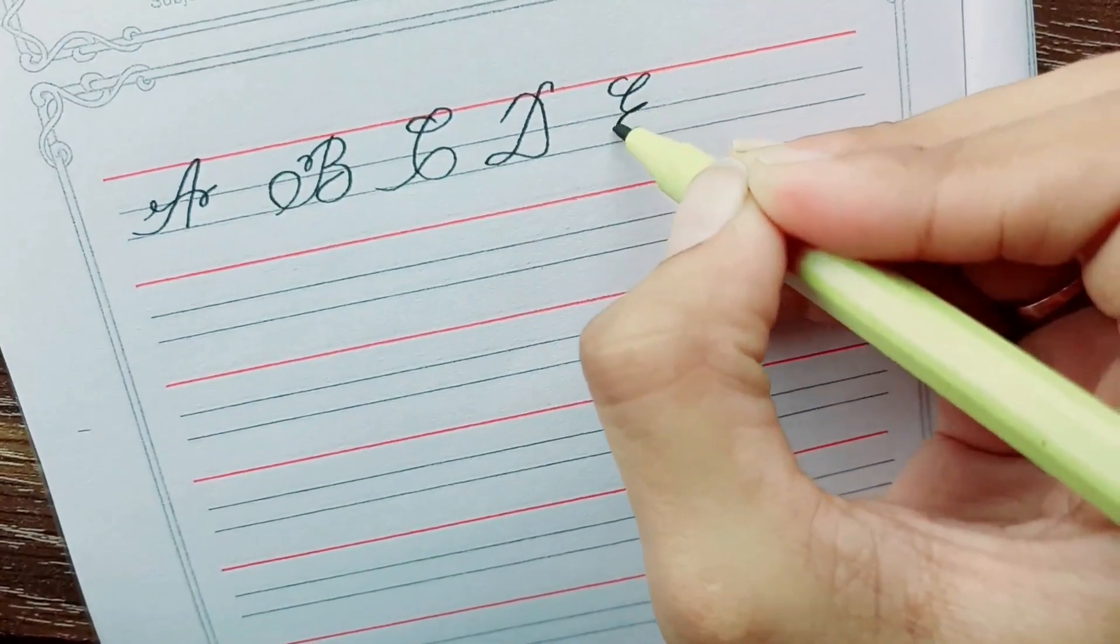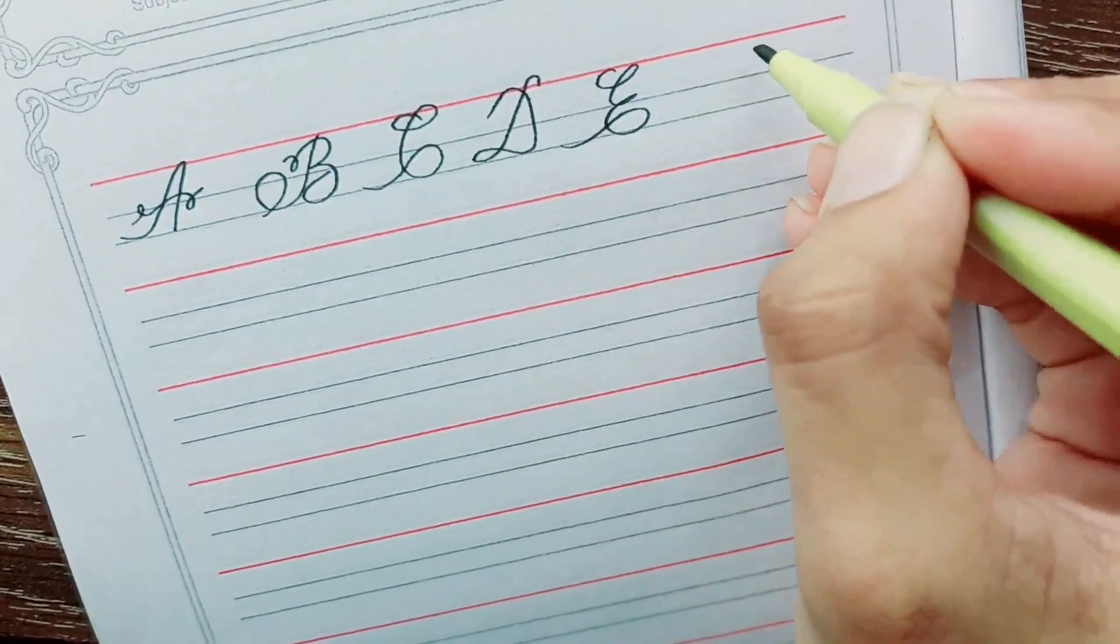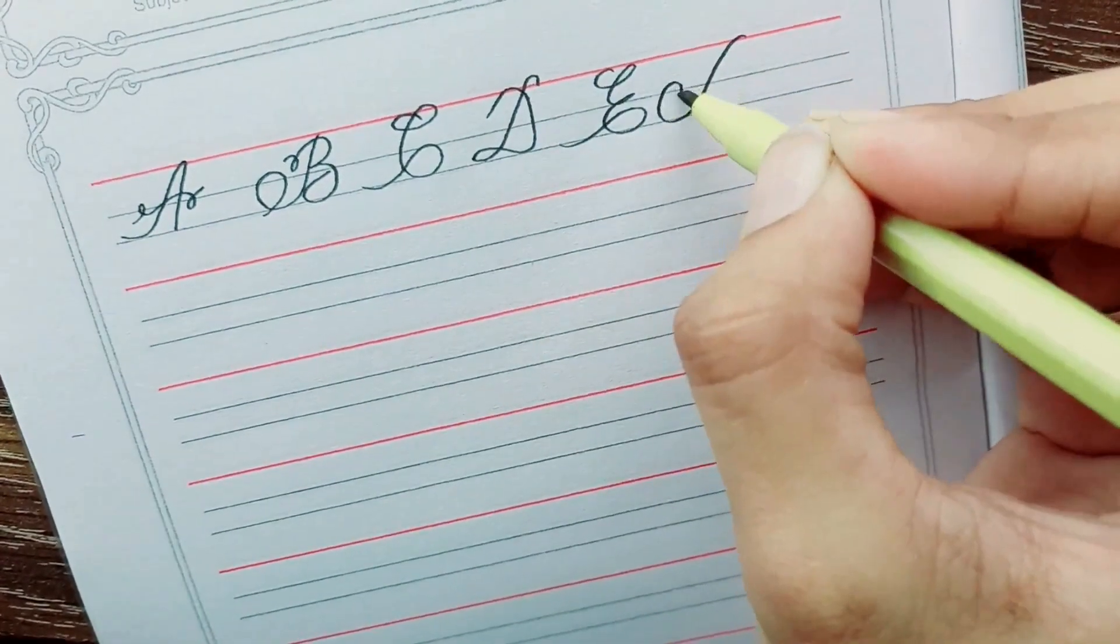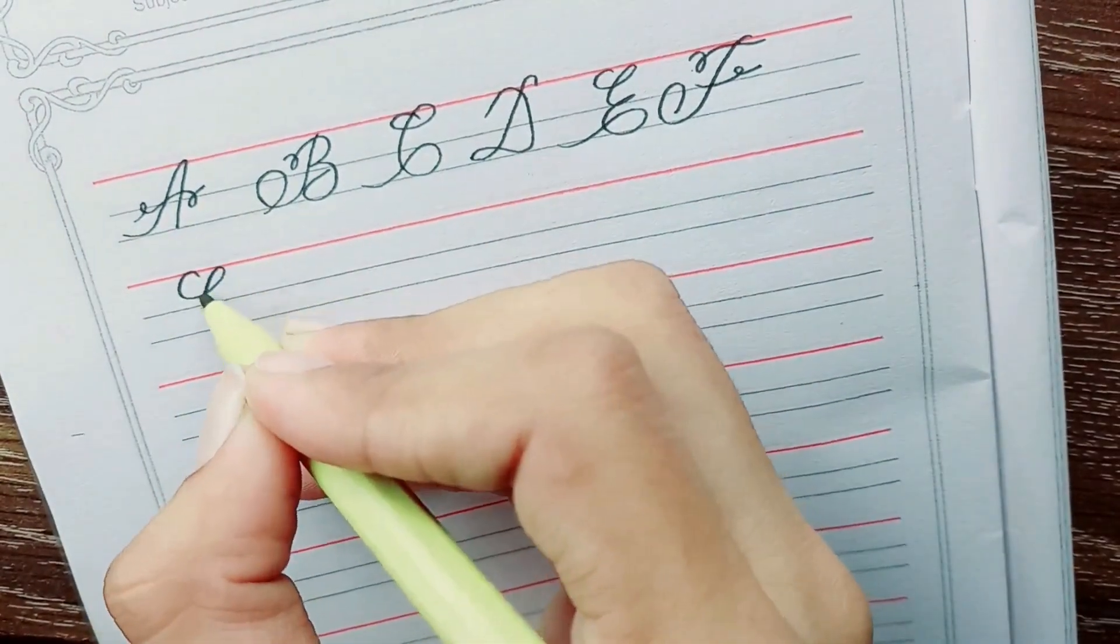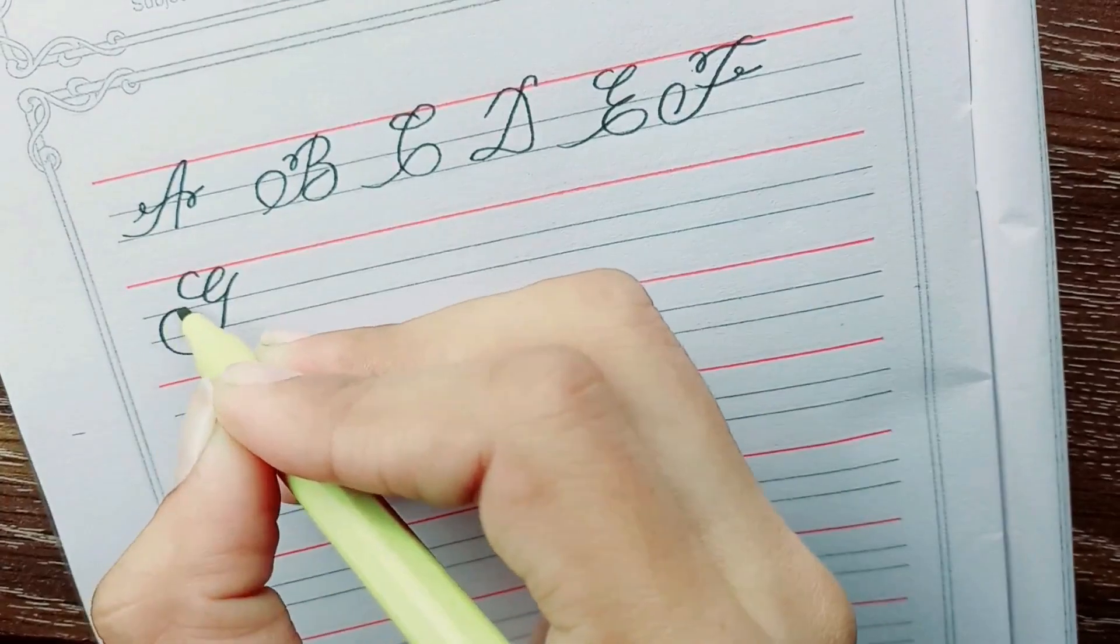E. E for egg. F. F for frog. G. G for grass.